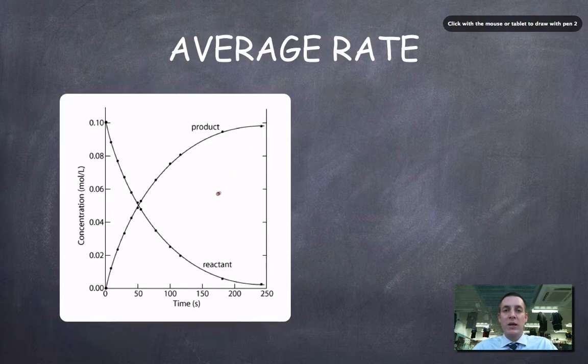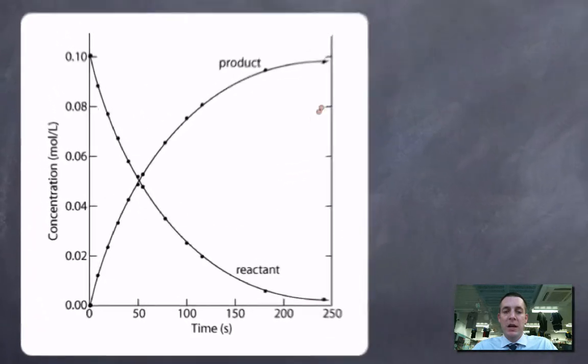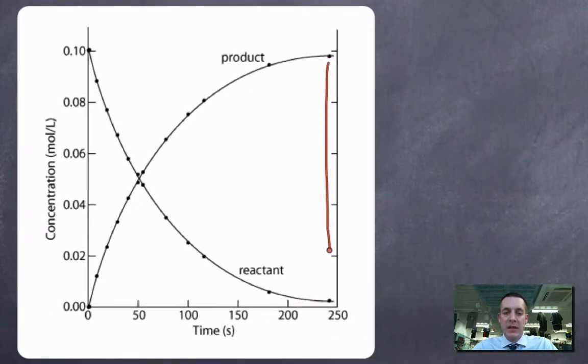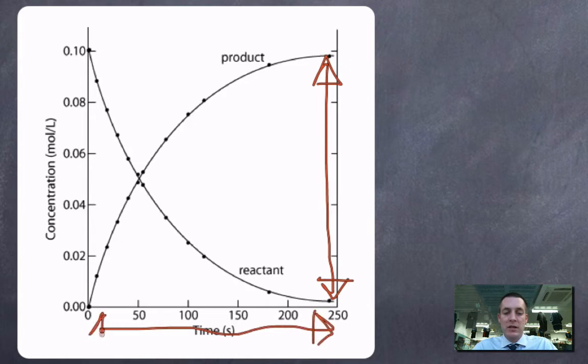The average rate is how fast things were happening on average between when the reaction started and when it finished. And the way we'd calculate this would be to find the overall change in the amount of product and divide it by the amount of time taken for that change to take place. So here is my overall change in the concentration of my product and here is the time taken for that to take place.